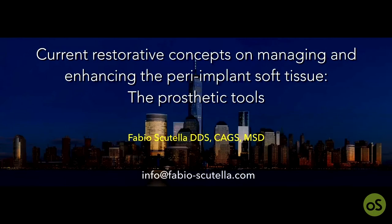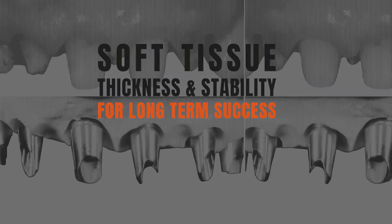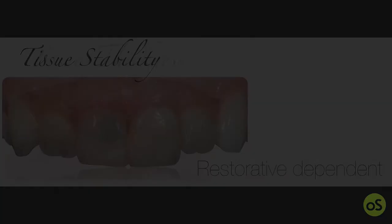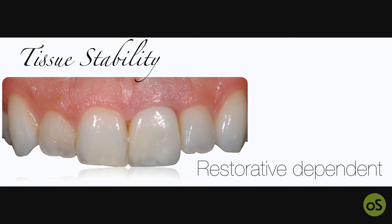Welcome everybody to this new web lecture on implants. The topic of my lecture is the current restorative concepts on how to manage and eventually enhance the peri-implant soft tissue — namely, what kind of prosthetic tools can we use to improve the soft tissue around implants? The tissue stability depends on the restorative procedures, and this is why we should know all the tools we have available from a prosthetic point of view to ensure stability of the tissue over time.